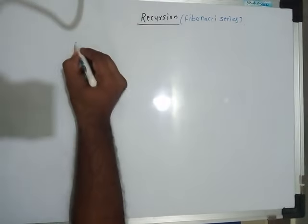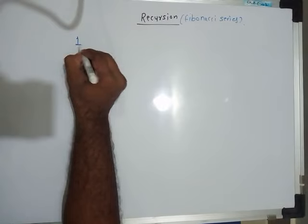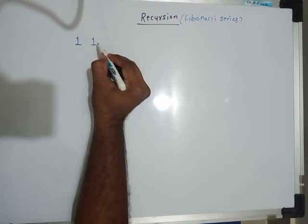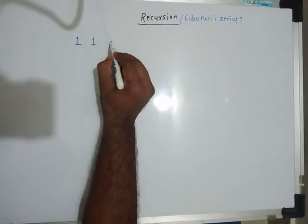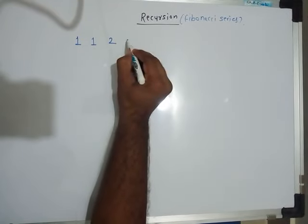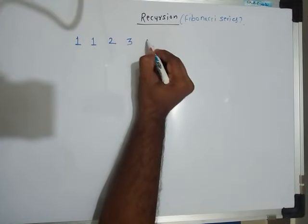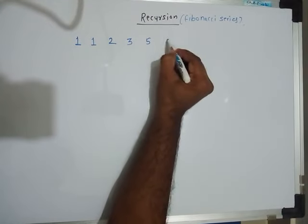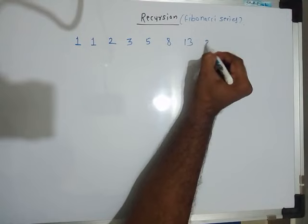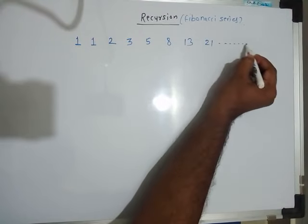Before solving the problem, let's understand what the Fibonacci series is. The first Fibonacci number is 1, the second is also 1, and the third is the sum of the first two: 1 plus 1 is 2. Then 1 plus 2 is 3, 2 plus 3 is 5, 3 plus 5 is 8, 5 plus 8 is 13, 8 plus 13 is 21, and so on.